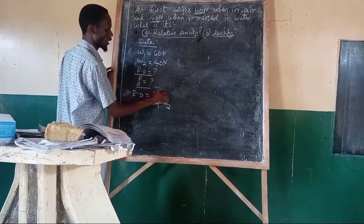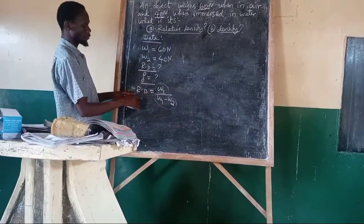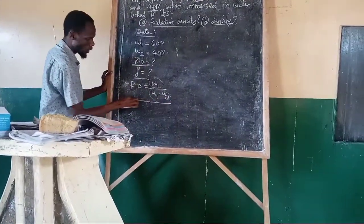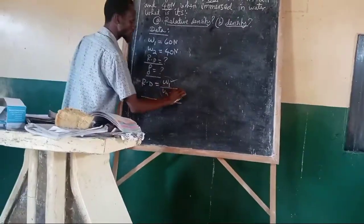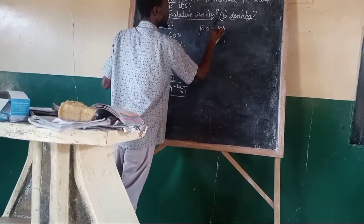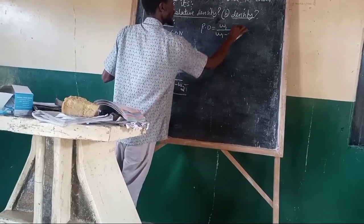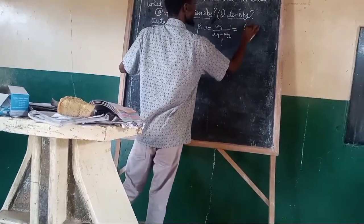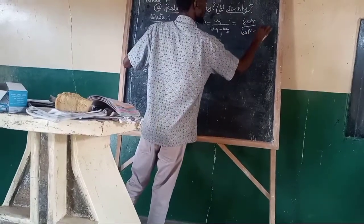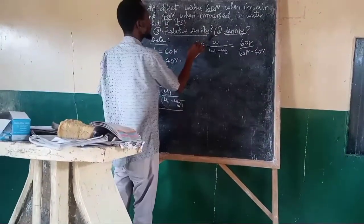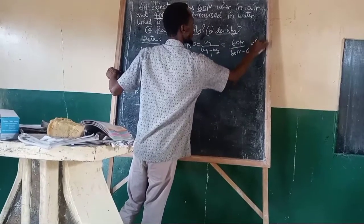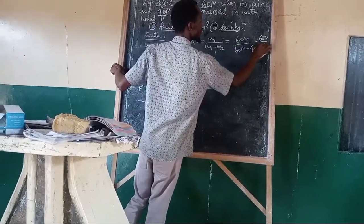This is the formula used to determine relative density by using this principle. Relative density is equal to W1 over W1 minus W2. W1 is 60 newton, and W1 minus W2 is 60 newton minus 40 newton, which gives 20 newton.